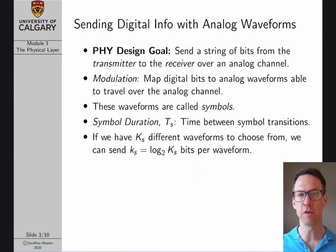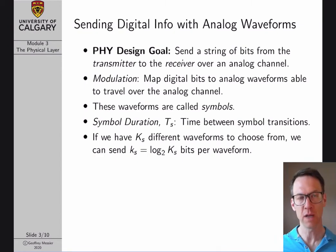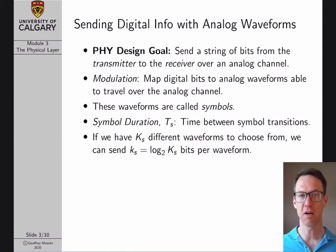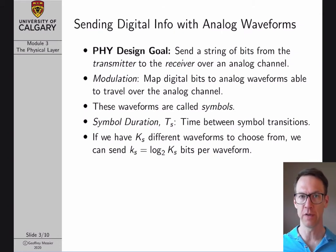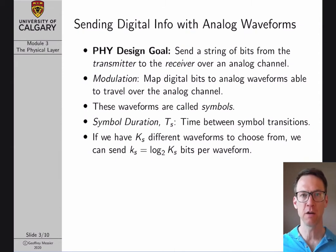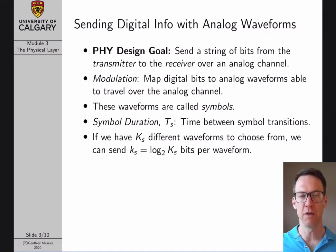The design goal of the physical layer is basically to send a string of bits from a node we call the transmitter to another node we call the receiver over some kind of an analog channel. This is the area of digital communications — it's a huge area with a whole undergraduate class dedicated to it. I actually did my master's and PhD specifically on physical layer communications. Because we are mainly interested in protocol design in this lecture series, I'm going to talk about the physical layer in this module without going into a ton of details, just so we're somewhat grounded in the terminology.